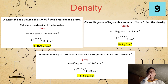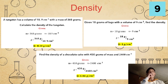Our second example: given 18 grams of a substance with a volume of 9 cubic centimeters, find the density. Given: mass equals 18 grams, volume equals 9 cubic centimeter. Using density equals mass over volume, we substitute: density equals 18 grams over 9 cubic centimeters. Our final answer is density equals 2 grams per cubic centimeter.